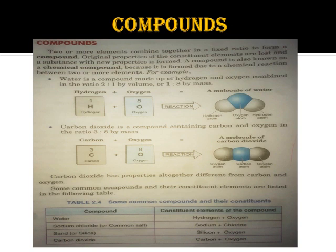When elements combine to form a compound, the original properties of the constituent elements are lost and a substance with new properties is formed. A compound is also known as a chemical compound because it is formed due to a chemical reaction. For example, water is a compound made of hydrogen and oxygen combining in a fixed ratio of 1:8 by mass.